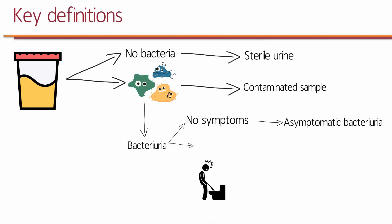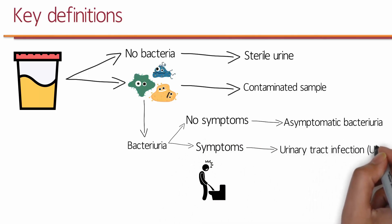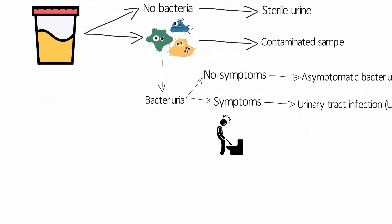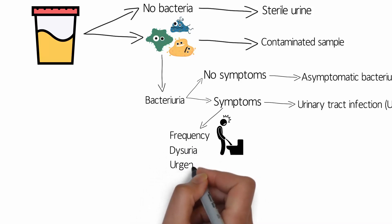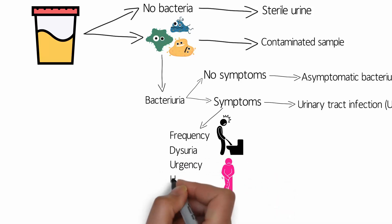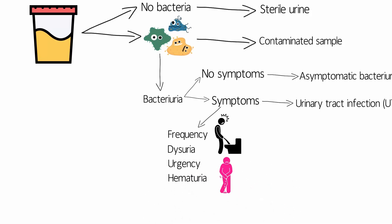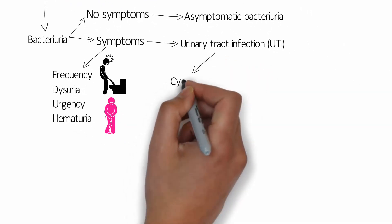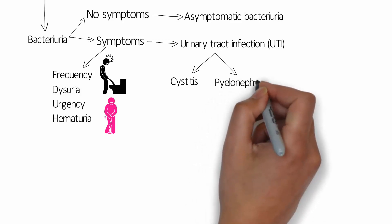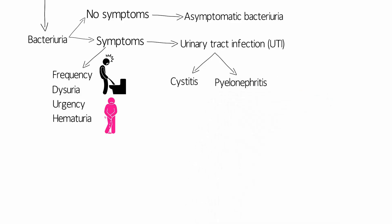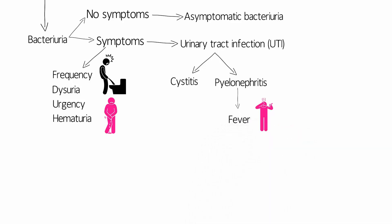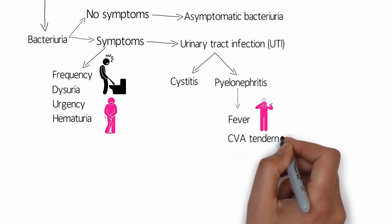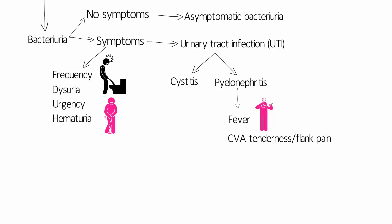If the patient does have symptoms, we call this symptomatic bacteriuria, more commonly known as urinary tract infection. The four most common symptoms are frequency — the patient has to urinate small amounts frequently — and dysuria, which is painful urination. There will also be urgency, or the urge to void immediately, and hematuria, or the presence of blood in the urine. The most common type of UTI is cystitis, or infection of the bladder. Pyelonephritis is not as common but is very important. Symptoms more specific to pyelonephritis include fever — which is not always present but is suggestive of pyelonephritis — and CVA tenderness, or flank pain, detected during physical exam as the physician taps on the back of the kidneys.